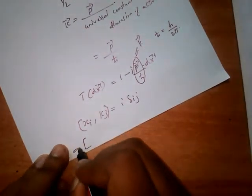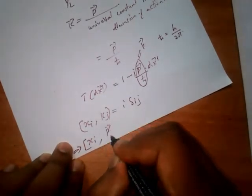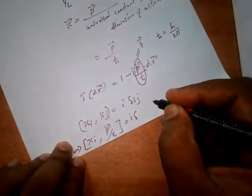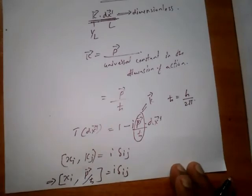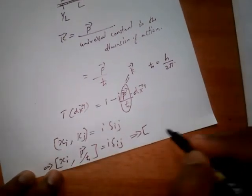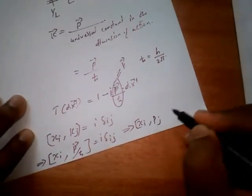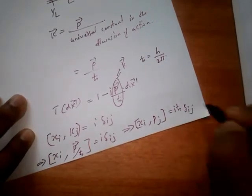This implies the important commutation relation [x_i, p_j] = iℏδ_ij.